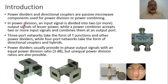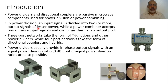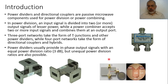In power division, an input signal is divided into two or more output signals. We can also find power dividers with more than two outputs — two, three, four, five signals, and so on. The input power is divided between the output ports, so the power at port 2 and port 3 is less than the power at port 1. The power combiner, on the other hand, accepts two or more input signals — power from port 2 and port 3 is added together at port 1.